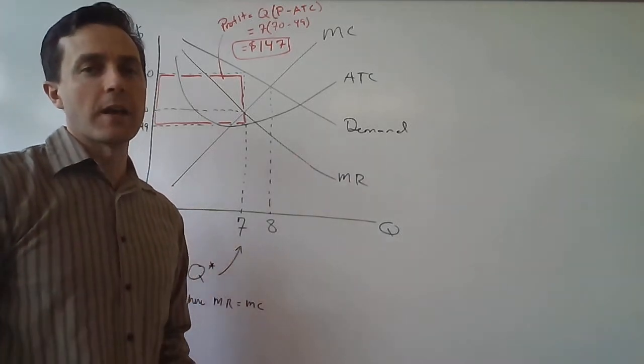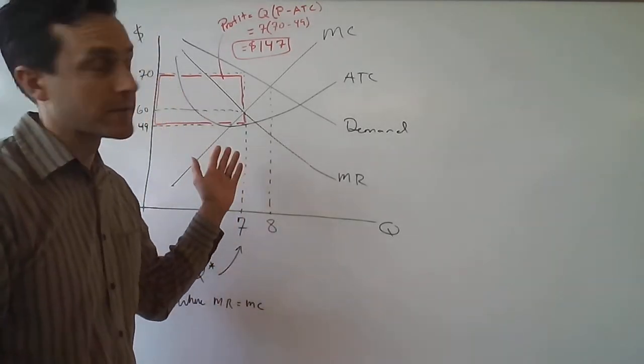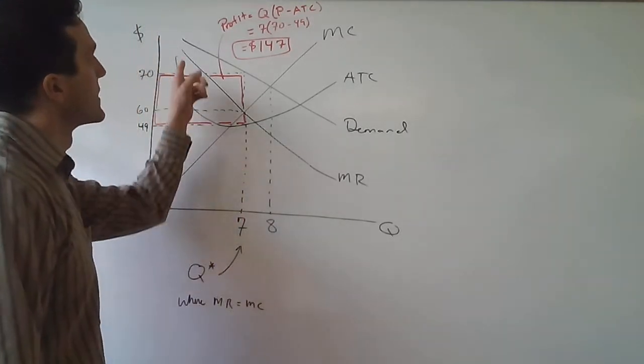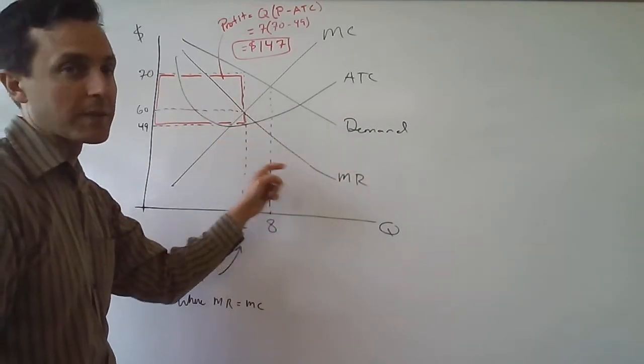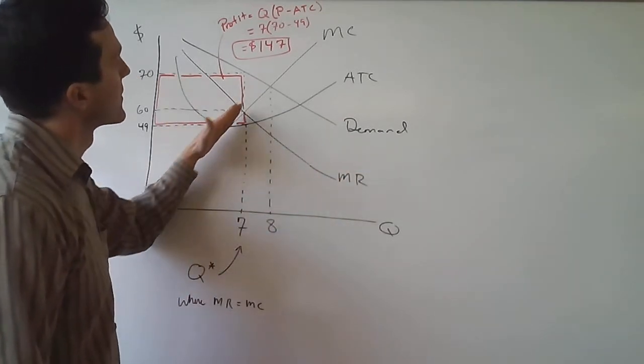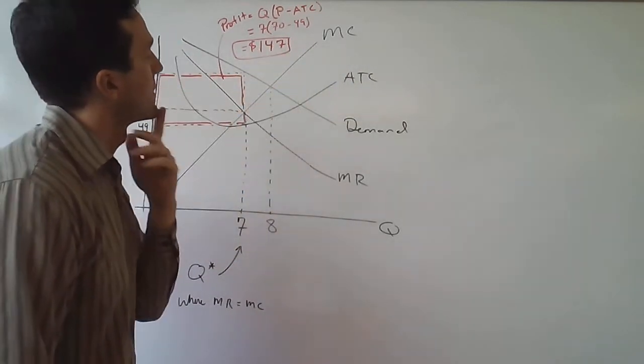All right, suppose we have a monopoly and the firm faces the following situation where it has a demand curve here, which implies the marginal revenue curve looks something like this, marginal cost going up like this, and we have average total cost coming down like this.